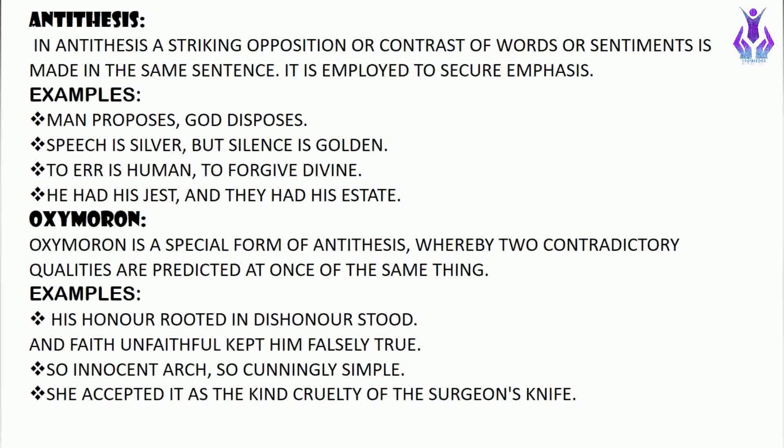The next is oxymoron. Oxymoron is a special form of antithesis whereby two contradictory qualities are predicted at once of the same thing. In simple words, oxymoron is when opposite words are placed side by side. Examples: 'His honor rooted in dishonor stood,' 'Faithful, unfaithful kept him falsely true,' 'So innocently cunning,' 'She accepted it as the kind cruelty of the surgeon's knife,' 'Beautiful tyrant.'